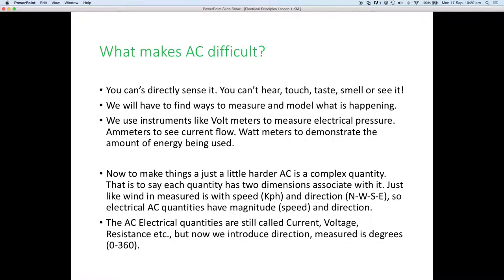So, now to make things just a little harder, AC is what we call a complex quantity. That is to say, each quantity has two dimensions associated with it. Just as wind is measured in speed, kilometers per hour, or knots per hour, and direction from the north, the south, the east, the west.